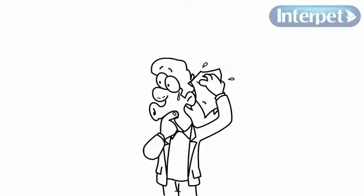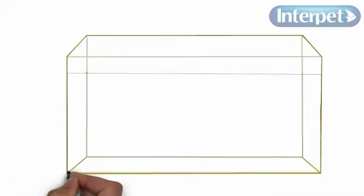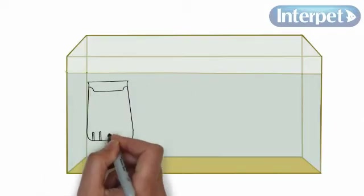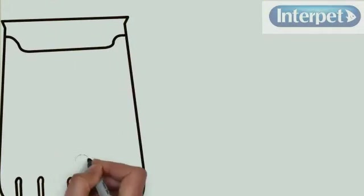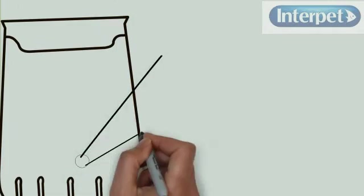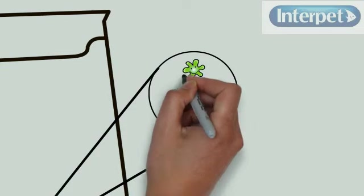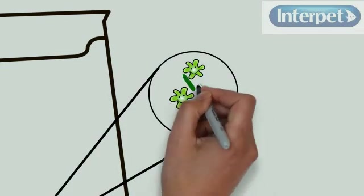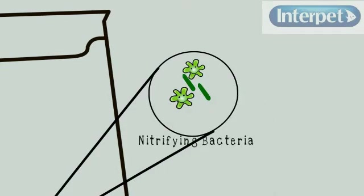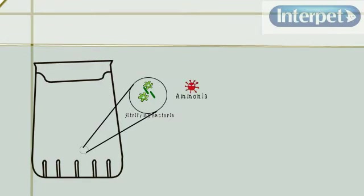The nitrogen cycle is carried out by friendly bacteria called nitrifying bacteria. These guys set up home, then reproduce in the biological media in the aquarium filter. Once established, they do the job of converting the poisons through the cycle into a type of plant food called nitrate.